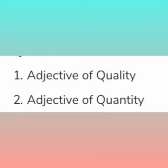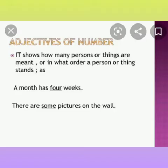Let us now see adjectives of number. It shows how many persons or things are meant, or in what order a person or thing stands. For example, a month has 4 weeks; there are some pictures on the wall. Adjectives of number include definite numeral adjectives, indefinite numeral adjectives, and distributive numeral adjectives.